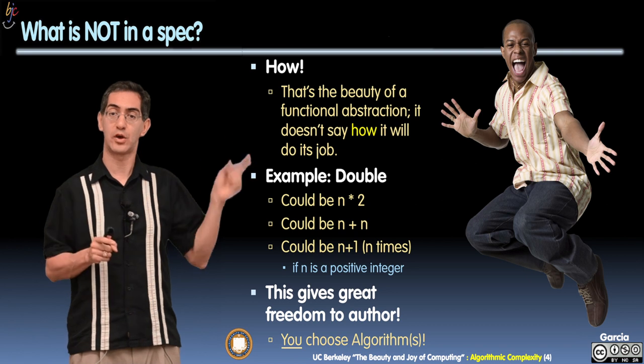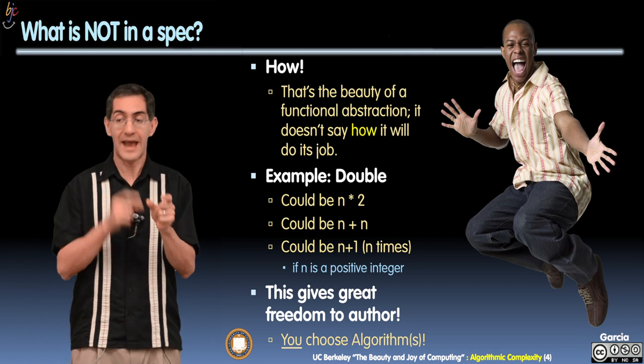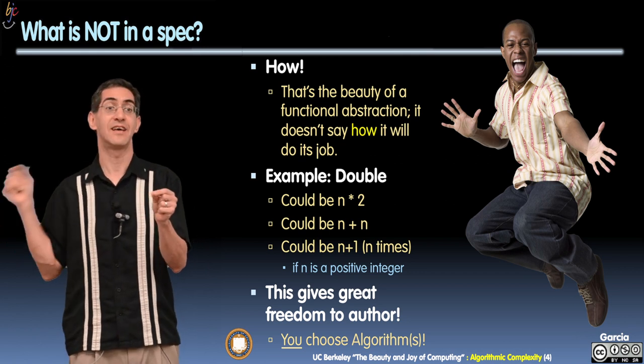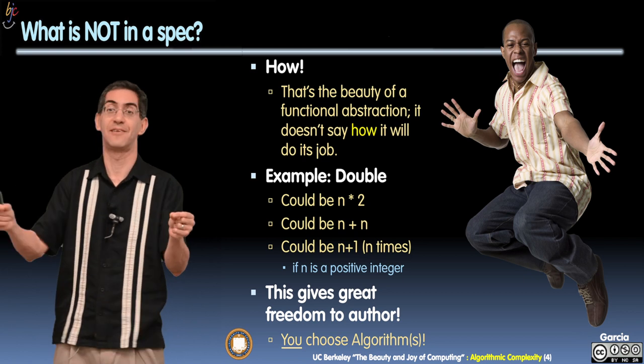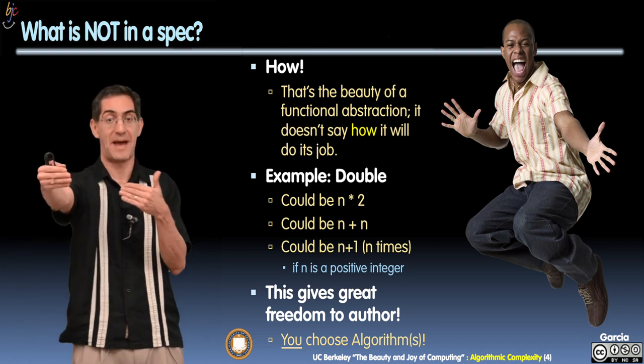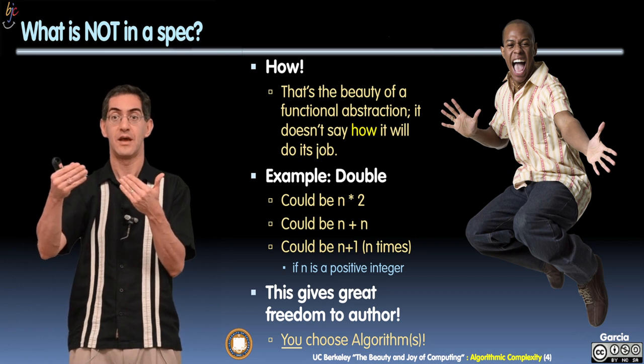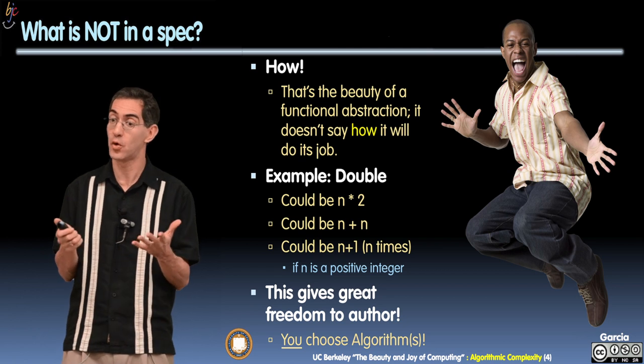So for example, my double guy could be n times 2, it could be n plus n, it could be n plus 1 n times, it could be n plus 1 and then subtracts something at the end. All of that's valid. As long as at the end of the day, it puts out 2n. Isn't that cool? That's really cool.